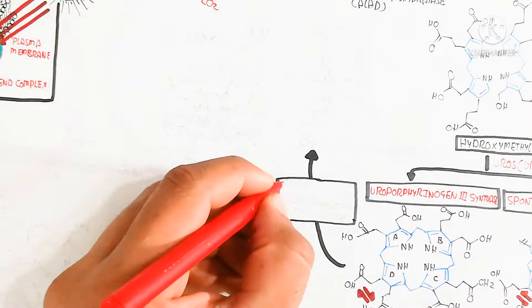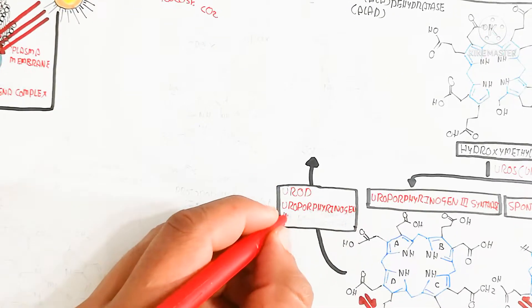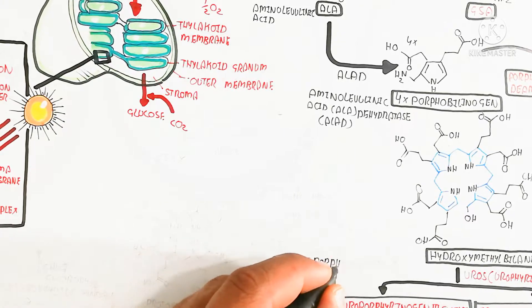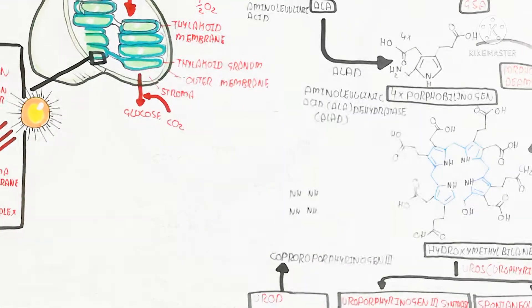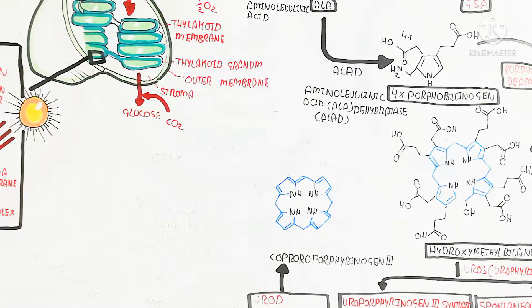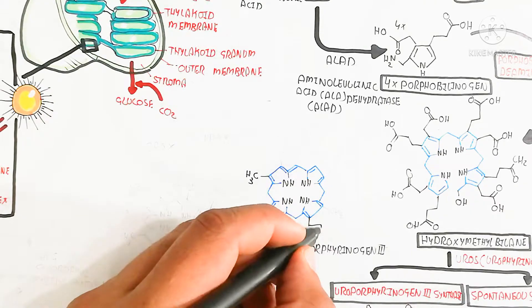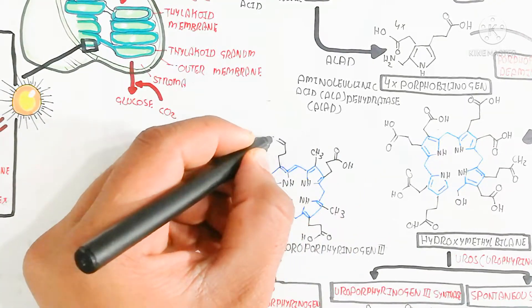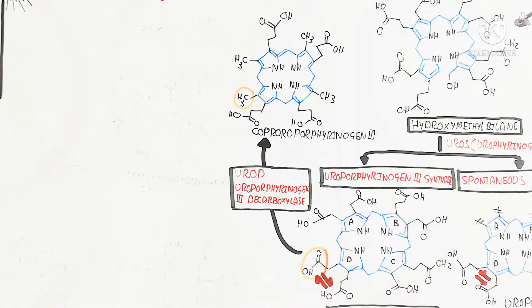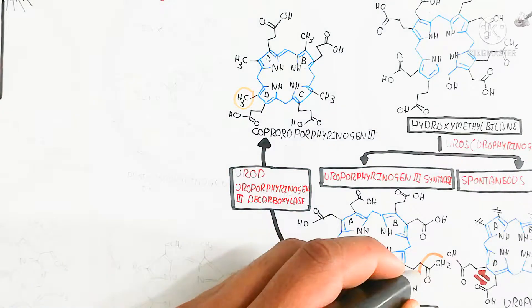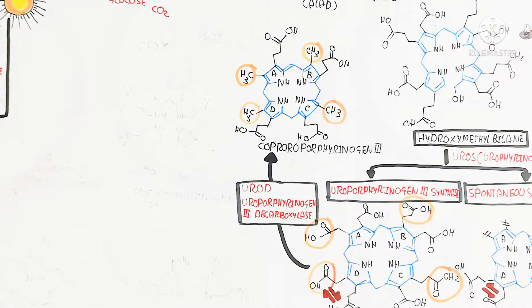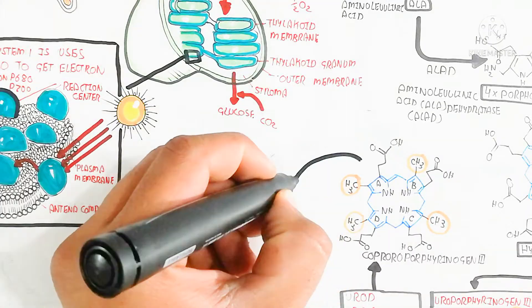The uroporphyrinogen 3 decarboxylase enzyme (UROD) is then used to produce coproporphyrinogen 3. The difference between uroporphyrinogen and coproporphyrinogen is that methyl groups are added and certain side chains change — the carboxyl groups and aldehyde groups are exchanged — resulting in this modification to form coproporphyrinogen 3.